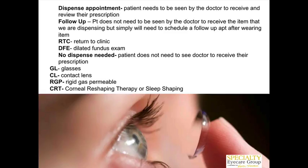When it comes to contact lenses, our office uses some specific terms. A dispensing appointment is where the doctor needs to see the patient to review the prescription. A follow-up is when we've already seen the patient or given them contact lenses and want to see them back after they've worn them. RTC means return to clinic. A DFE is a dilated fundus exam where we put drops in to dilate the patient's eyes. GL means glasses, CL means contact lenses, and RGP or GP means rigid gas permeable — a hard contact lens. Sleep shaping lenses are worn at nighttime to reshape the corneal surface; we use a brand called CRT.